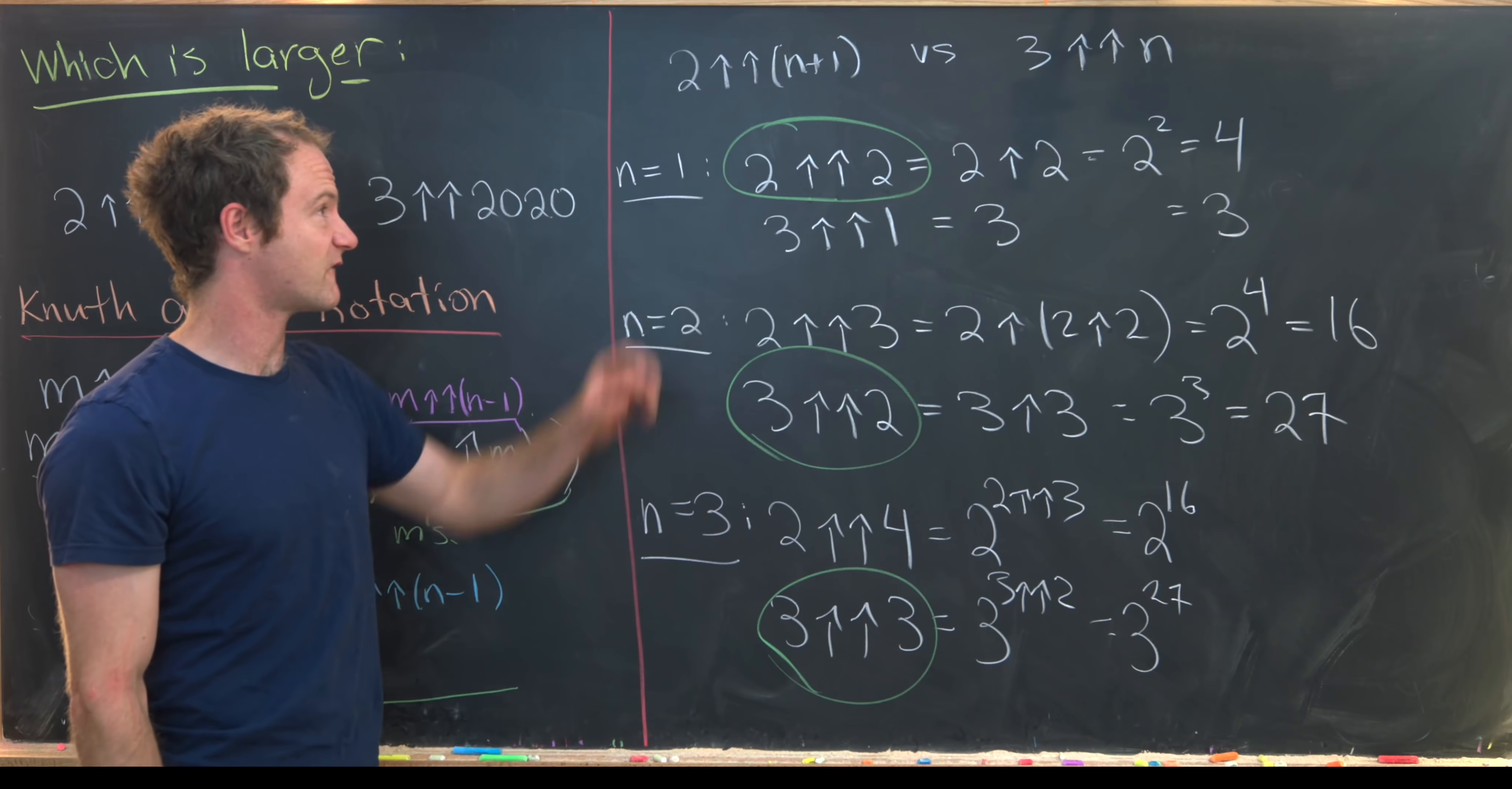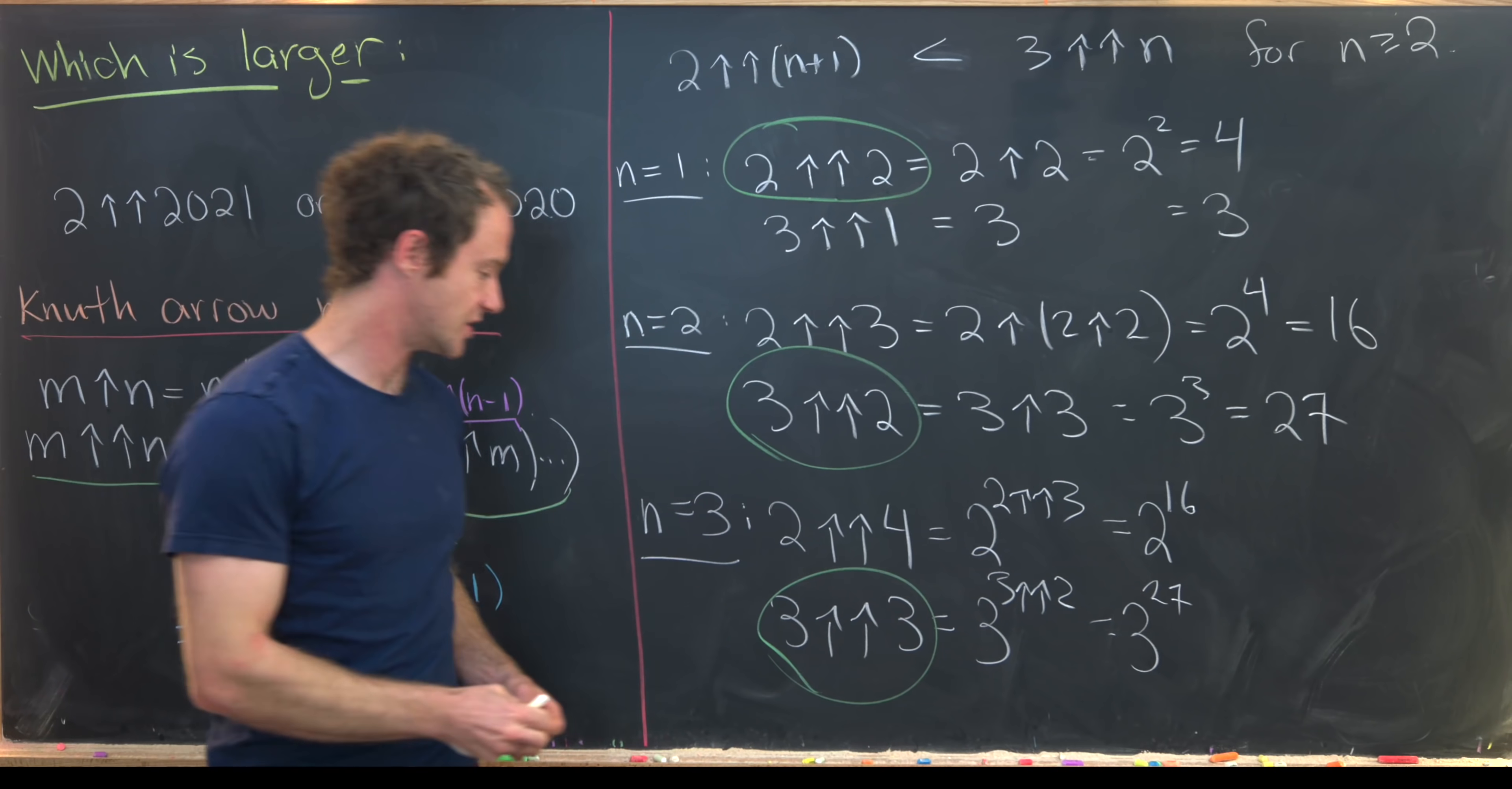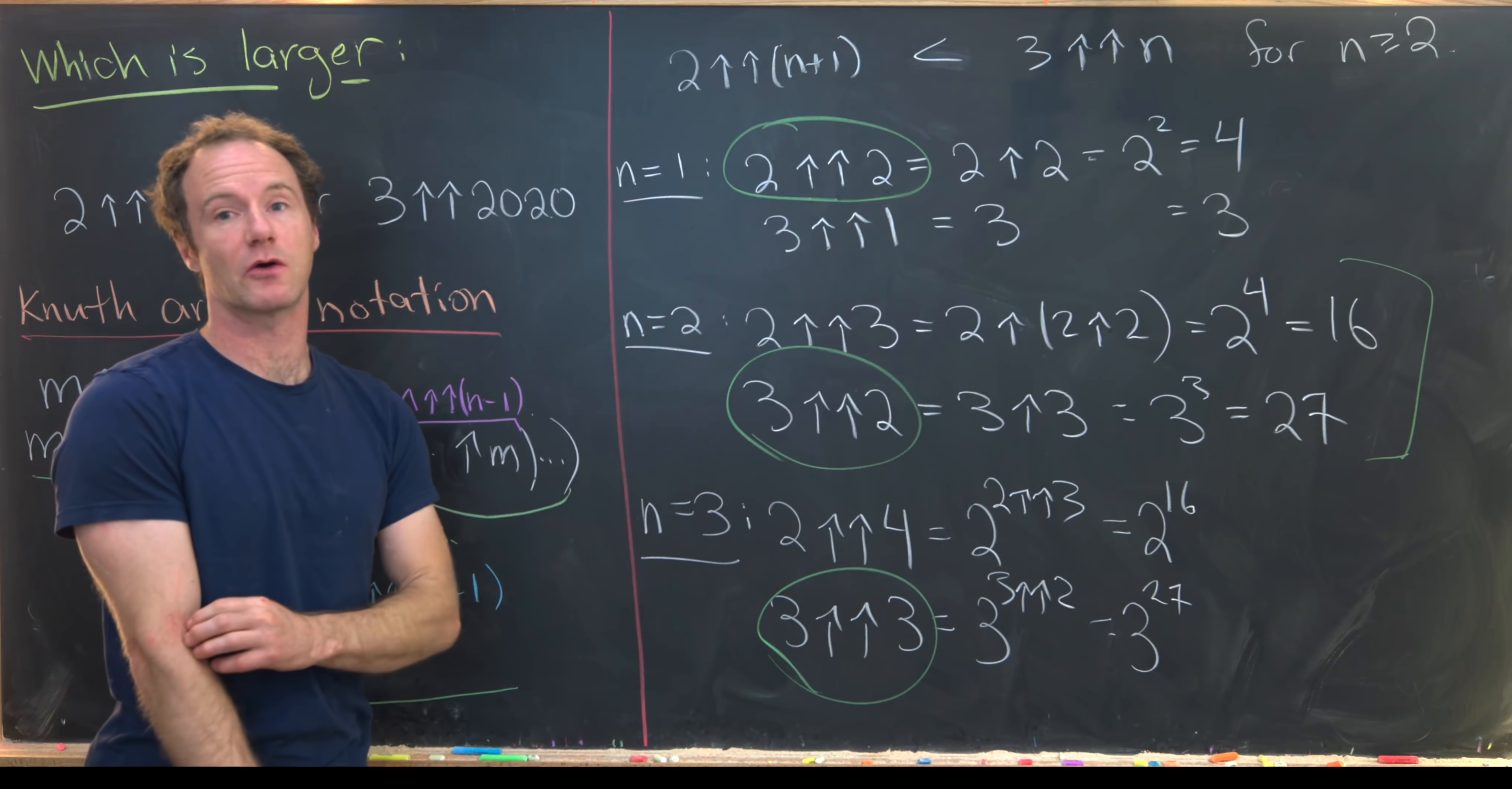So except for this first case it looks like we have the following inequality. We have 3 double up arrow n is larger than 2 double up arrow n plus 1 for n bigger than or equal to 2. So we can prove this by induction where we've already taken care of the base case with this first calculation. Notice we have to be careful to set n bigger than or equal to 2 because this did not hold for n equals 1.